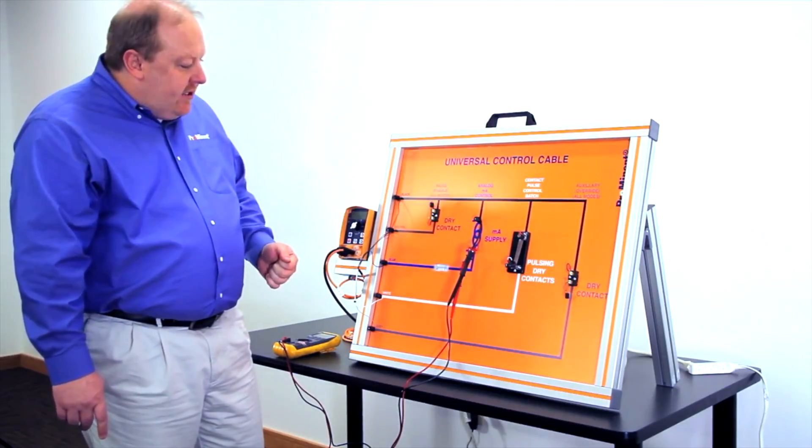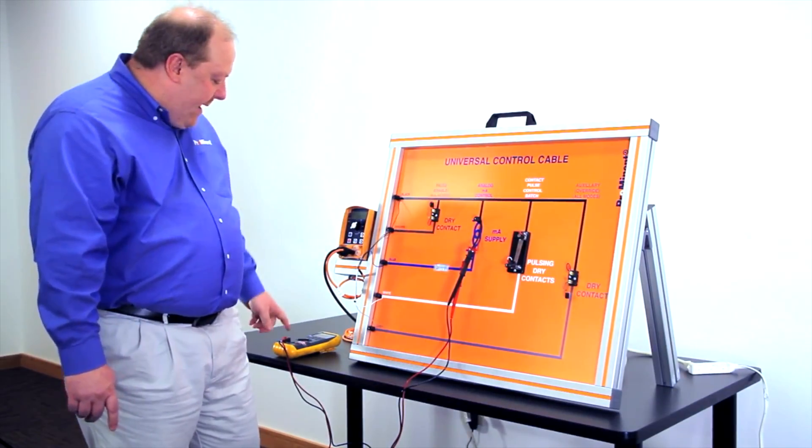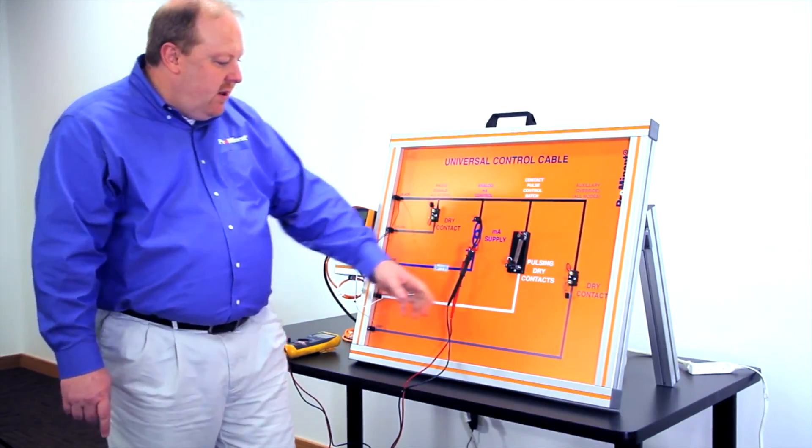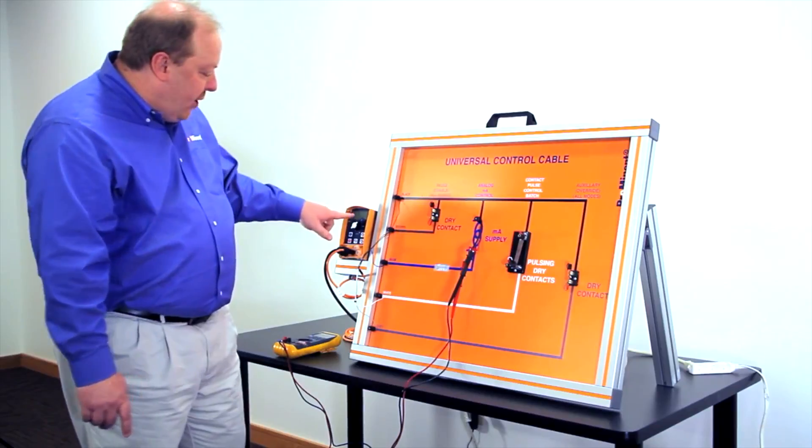The last thing we'll talk about is the auxiliary frequency. The auxiliary frequency lets us override any of the signals that we have going into the pump and run at a predetermined speed.